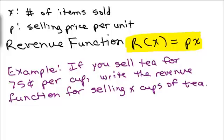So our revenue function, R(x), depending on how many items we sell, will be the price for selling each item times how many items we sell: p times x.